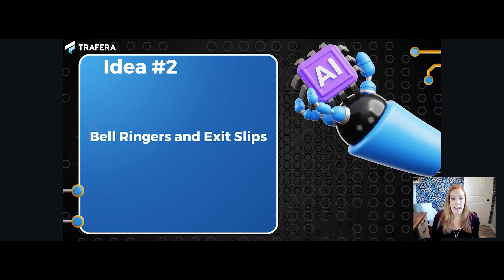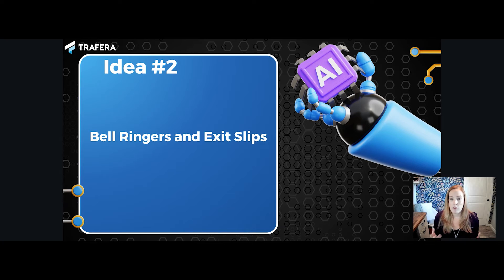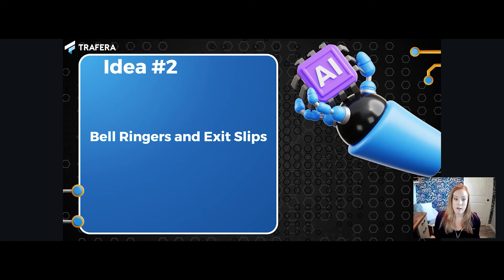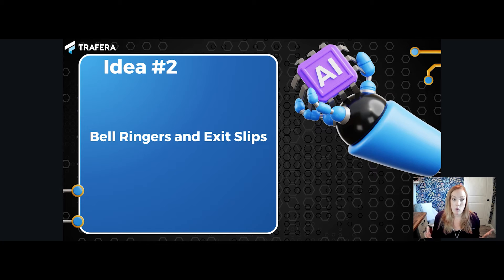Another idea for using AI in the classroom is for bell ringers and exit slips — for formative assessments or even just for fun. You can go to your AI tool and insert standards, text passages, chapters from a book, or specific topics you're working on, and easily create lists of ideas for these quick assessments. For example, I could ask ChatGPT to create a list of five exit slip questions for the first six chapters of the book Holes by Louis Sachar that relate to different character traits exhibited up to that point. You can get really specific or keep it general, and it will generate a great list of relevant questions.